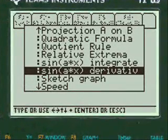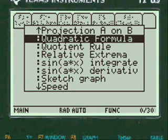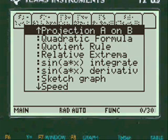You scroll to where your choices are. In this calculus calculator program app, I'm demonstrating how to solve step-by-step the derivative of sine of 2x. You can see the choices here of all this on my menu. Many things: projecting A and B, quadratic formula, quotient rule, relative extrema, like that's graphing by hand.